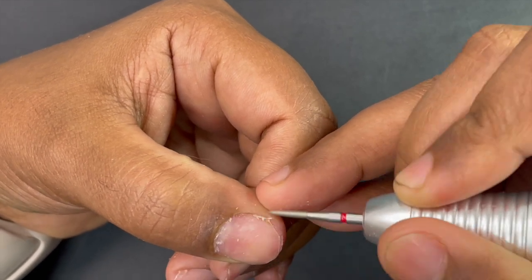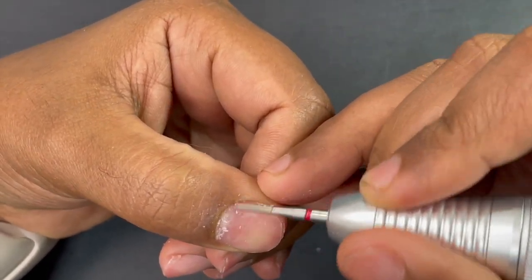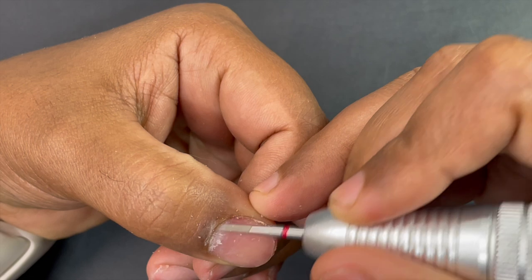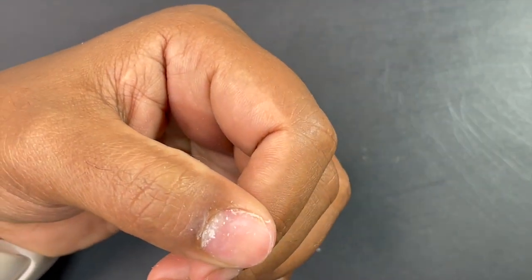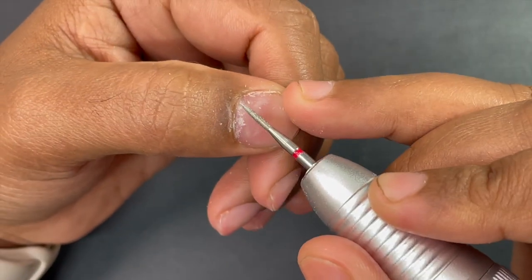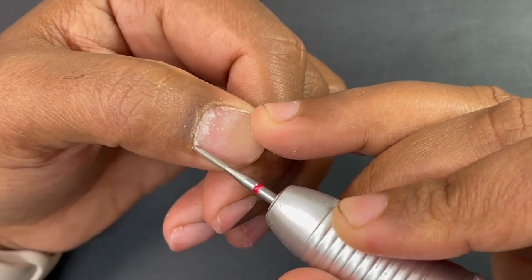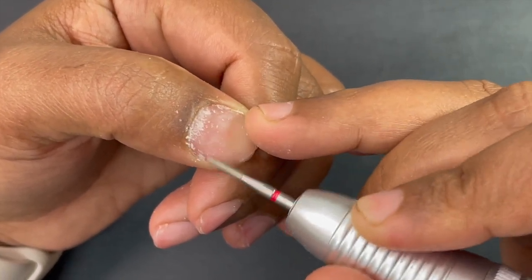As usual, I'm starting with dry manicure. I'm using my electric file to do the dry manicure. I'm quickly using a flame bit to remove the dead skin around the cuticle area and once I'm done with this, I'll be switching into a hand file which is a 180 grit.